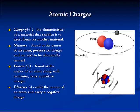In stable matter, these charges are balanced. When matter has an excess of either protons or neutrons, it is said to be electrically charged.